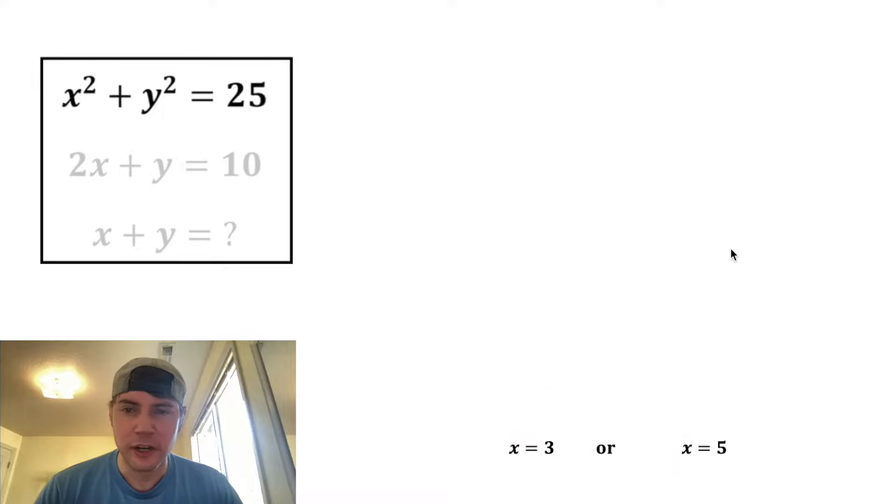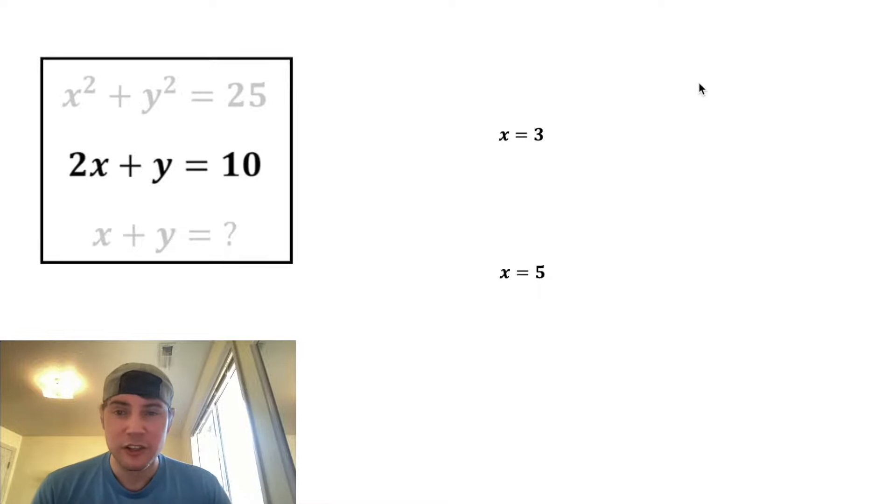So we don't really need any of this work anymore, and let's bring these up here. Since our goal is to figure out what is x plus y, we want to find out our corresponding y values. So let's use this 2x plus y equals 10. We'll copy it down, solve for y in the place of this x, let's plug in three. Two times three is six,